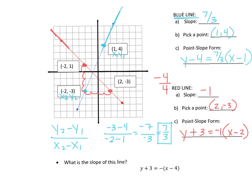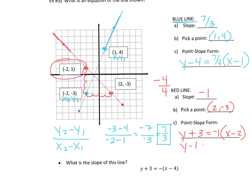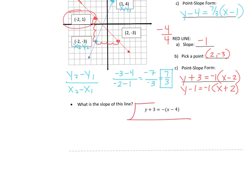If you pick the other point (−2, 1) instead, the equation looks like y − 1 = −1(x + 2). Both of those are correct — it doesn't matter which one you give. If you convert them both to slope-intercept form they'll look identical, even though they don't right now. You can pick whichever point you want. Also, if there's a negative sign out front with no number attached, the slope of that line is negative one.